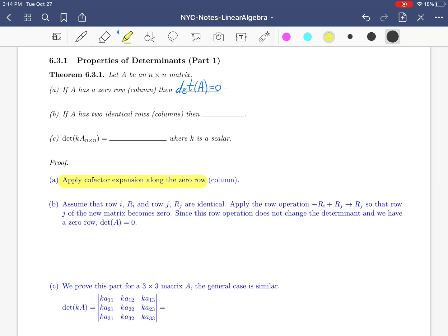Part B: if A has two identical rows or two identical columns, then again, the determinant of A is 0.